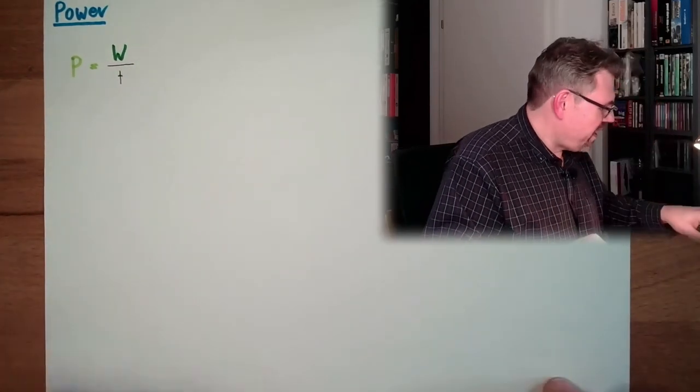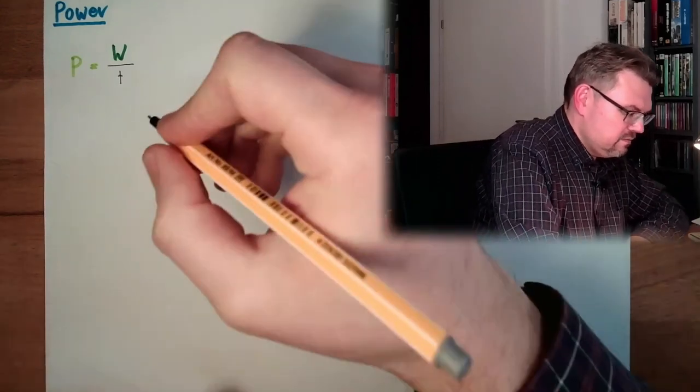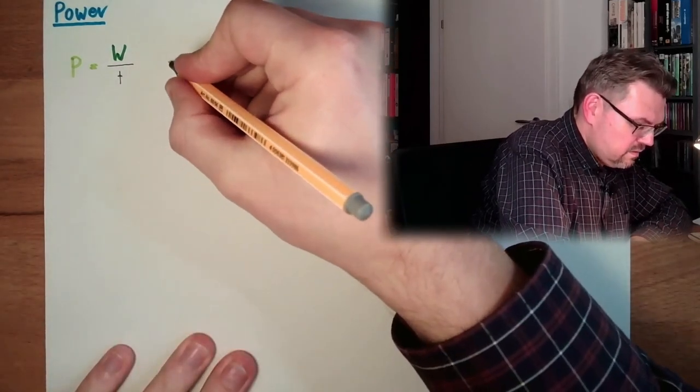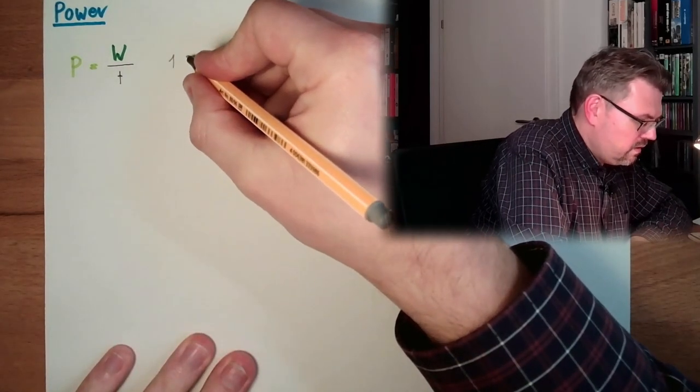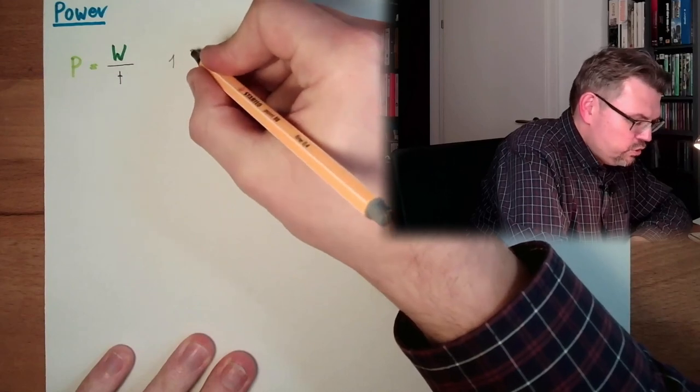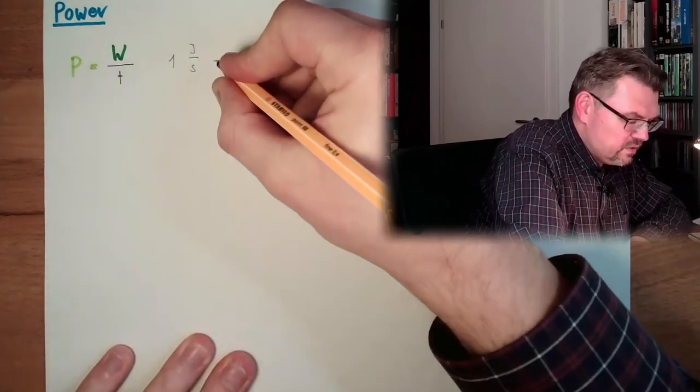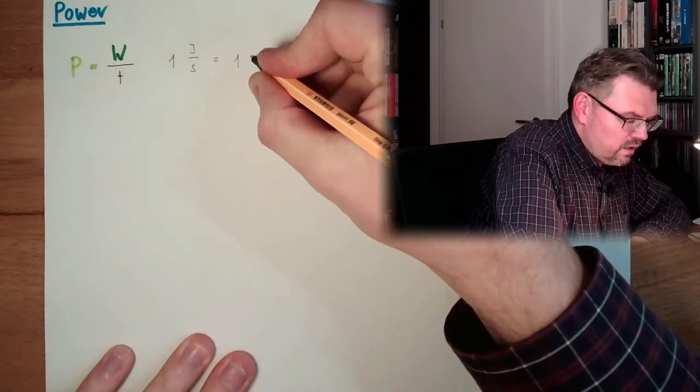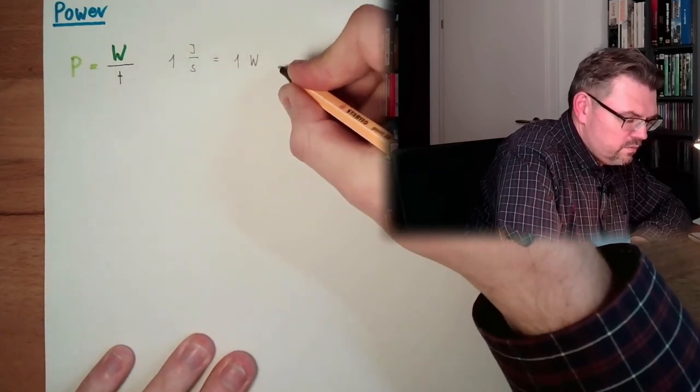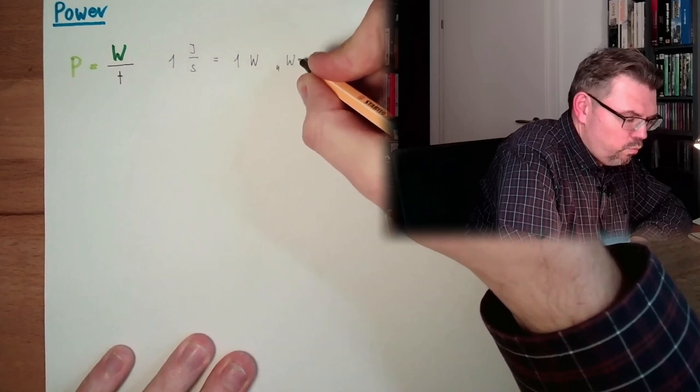So the unit of power is 1 joule per second. And this is called 1 W, watt.